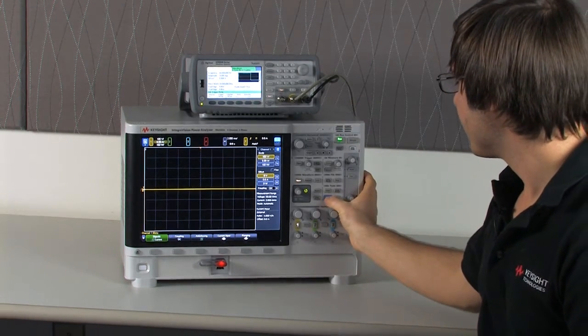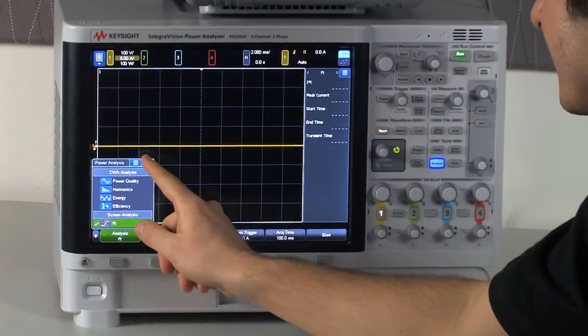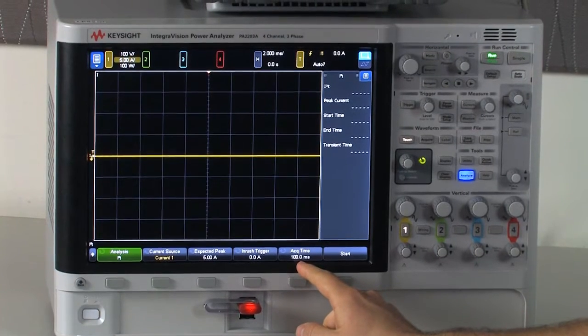Now to get started, simply click on Analyze and change your analysis to I-squared-T. And here come up a few parameters for us to set.